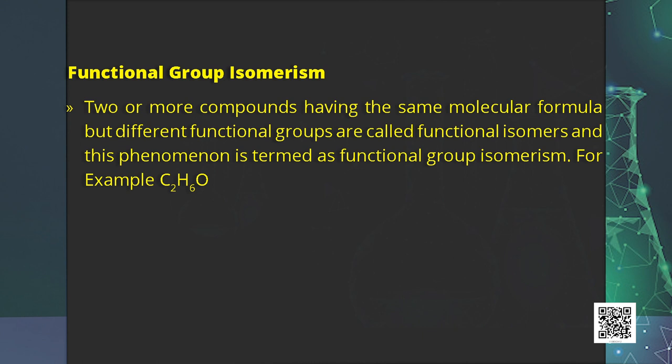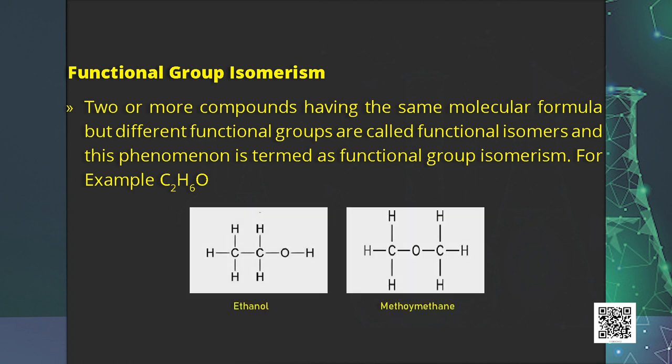Next is functional group isomerism. Two or more compounds having the same molecular formula but different functional groups are called functional isomers. For example, the compound C2H6O can represent two different compounds: ethanol, which has an alcoholic functional group, and methoxymethane, which has an ether functional group.